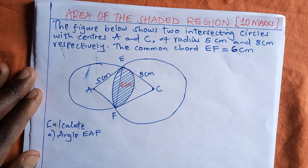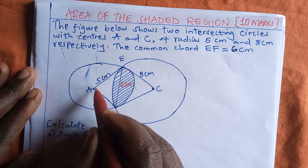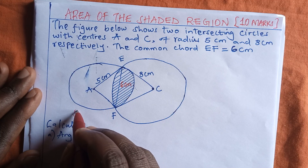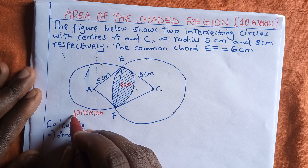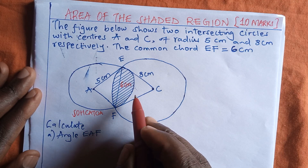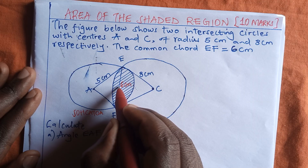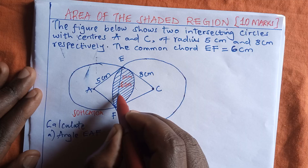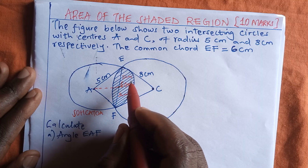We are supposed to calculate angle EAF. To work out this angle, we need to remember the acronym SOH CAH TOA, which is very important for working out the angles. We've been told that the chord EF is six centimeters, so half of the chord is three centimeters on each side.